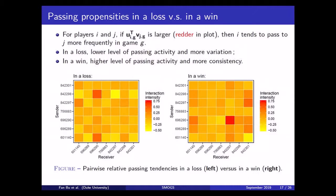So, in those heat maps, what's going on is the tile in the i's row and j's column represents the inner product of player i's sender effect and player j's receiver effect. The redder the color is, the higher the propensity is for i to send a pass to j in a particular game. Same as before, the lost game is on the left panel and the won game is on the right panel.